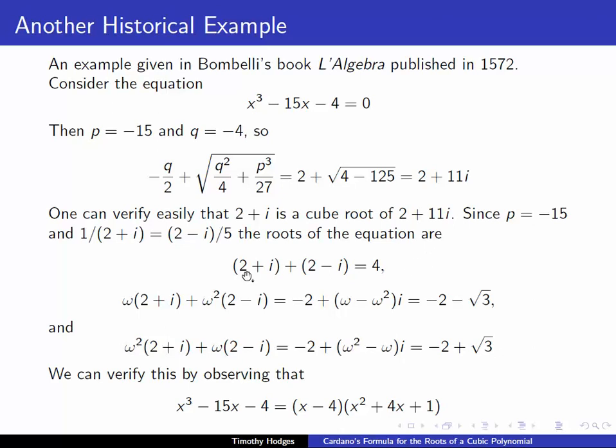The roots of the equation are firstly 2 plus i plus 2 minus i, which is 4, and then we replace 2 plus i by the other cube roots, repeat the process, and we get minus 2 minus cube root of minus 2 minus the square root of 3, and minus 2 plus the square root of 3. And one can unravel this a little further by noticing that one can factorize x cubed minus 15x minus 4 into x minus 4 times x squared plus 4x plus 1. And of course, the usual quadratic formula would yield the roots above.